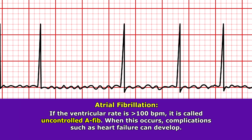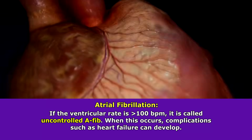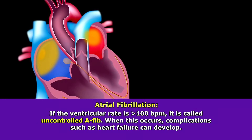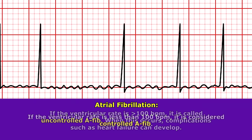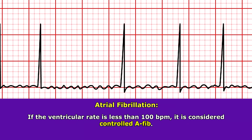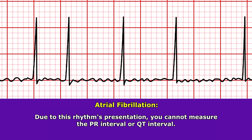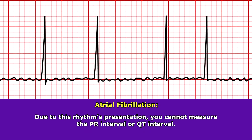Whenever uncontrolled AFib occurs, significant complications can happen because that heart is beating way too fast and not pumping like it should. Therefore, heart failure can develop if we don't get the rate under control. If the rate is less than 100 beats per minute, this is considered controlled AFib. Because of the presentation of this rhythm, you cannot measure the PR interval or the QT interval.